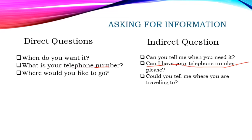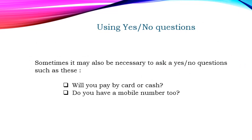Not only direct and indirect questions — there are also yes/no type questions, called closed polarity questions. Sometimes the answer may also be in a poll format. For example: 'Will you pay by card or cash?' or 'Do you have a mobile number?' — the reply would be either yes or no.